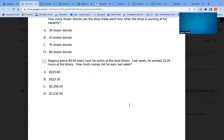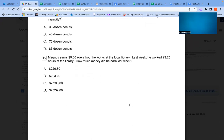Number 15: Magnus earns $9.60 every hour he works at the local library. Last week he worked 23.25 hours at the library. How much money did he earn last week? A. $220.80. B. $223.20. C. $2,208. D. $2,232.